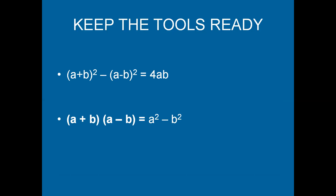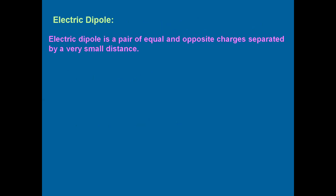Before we do the derivation, let us be familiar with what is an electric dipole. An electric dipole is nothing but a system of two equal and opposite charges separated by a very small distance. Both charges will have equal magnitude, but one will be negative and the other will be positive in nature.